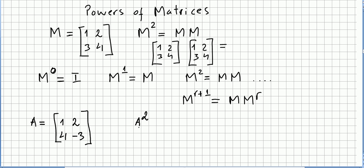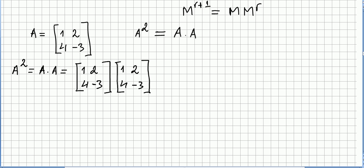So we are going to perform some operations here now. For instance, if we are given this matrix 1, 2, 4, minus 3, and we are asked to calculate A squared, we have to do A times A.